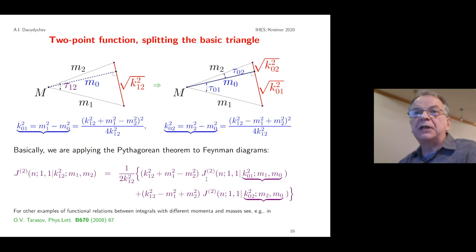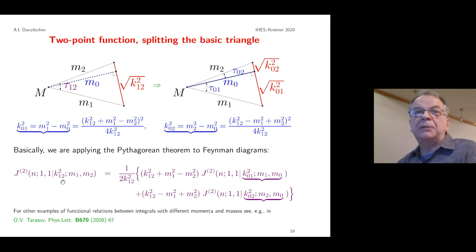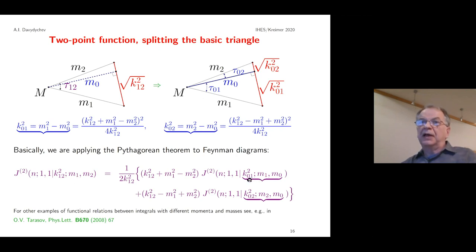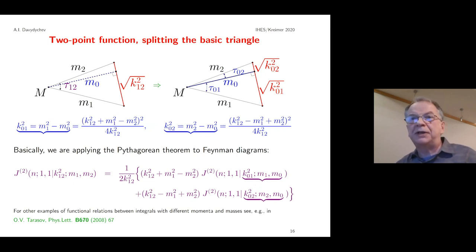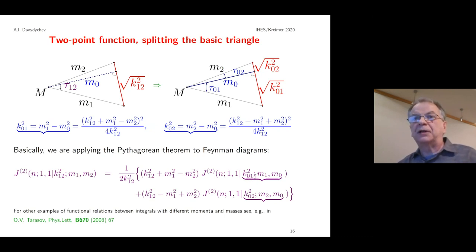We split our original integral over angle τ₁₂ into two integrals: one over τ₀₁ and another over τ₀₂. Each piece corresponds to a new Feynman integral but with different momenta and masses. We split the original integral with k₁₂² and m₁, m₂ into two integrals whose arguments satisfy the Pythagorean theorem. Not all three variables are independent — only two are — so we effectively reduce the number of variables. The original integral depended on three variables; both integrals on the right-hand side depend on only two.